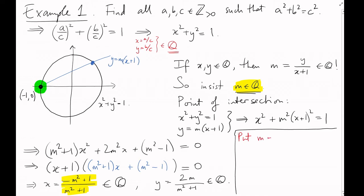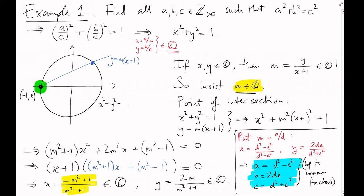Now, m is rational. Let's say m equals e over d. Substituting back up the chain of equations, we can work out x and y in terms of d and e, and then multiply through by all the denominators to find out what our integers a, b, and c must have been. This shows that, up to some common factors, we can take a equals d squared minus e squared, b equals 2de, and c equals d squared plus e squared. This is the same parametrization of the Pythagorean triples that we found in video 1.